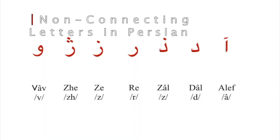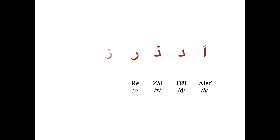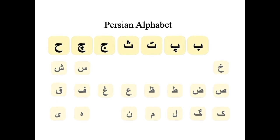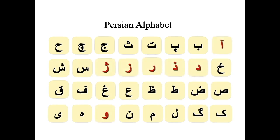In this lesson, we're going to learn about the features of the seven non-connecting letters. Here are the seven non-connecting letters. In Persian, the letters are categorized into two types: connecting and non-connecting letters. There are 25 connecting letters and seven non-connecting letters.